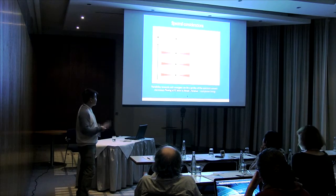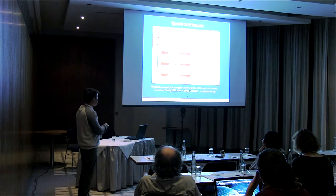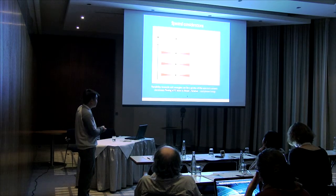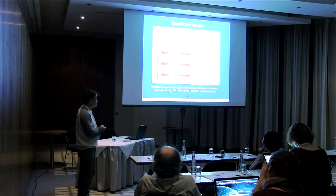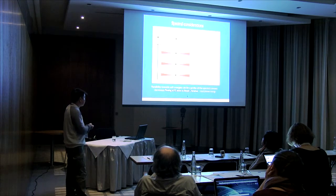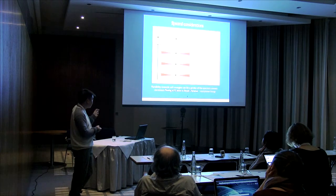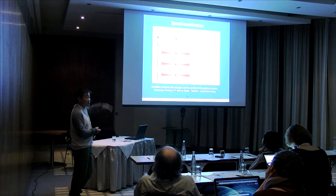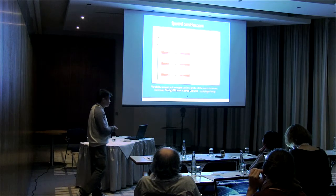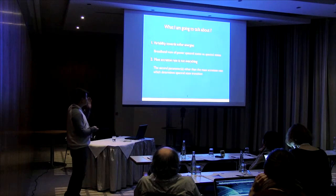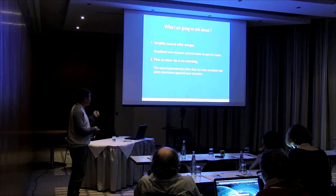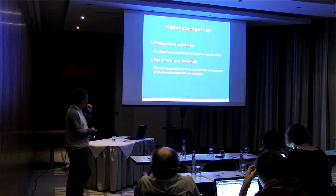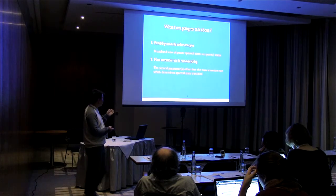There's another thing I want to talk about. If we look at the spectra for these black hole states, and go further down in soft energies, we'll be able to probe the hard component. So I'm going to talk about variability towards soft energies, which can be a probe of spectral content — for example, discriminating whether variability comes from a pivoting of the photon index or just a simple luminosity variation. We might also be able to probe the photon energy of the seed photons. We need a broadband view of all spectral states, and mass accretion rate is not everything — we want to know what the second parameter is.